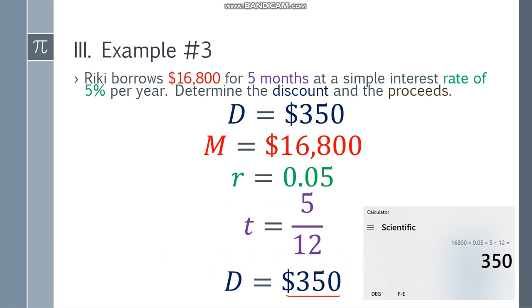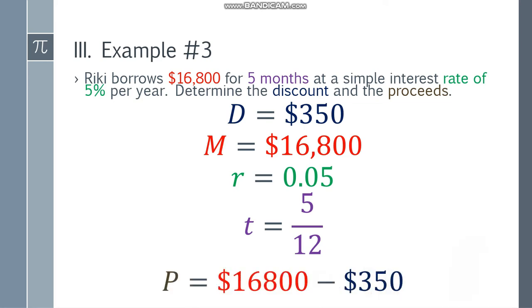How do we get the proceeds? Proceeds equals 16,800 minus 350. M minus D. The final answer will be $16,450. So the discount is $350 and the proceeds is $16,450.